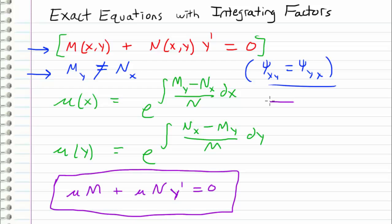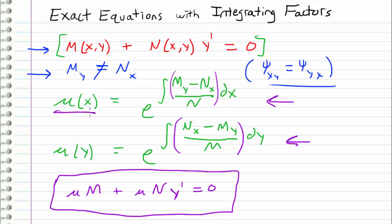The question you may ask is: which integrating factor do I pick? Typically, you pick the one that has the easiest integral to deal with. If (M_y − N_x)/N is easier to integrate than (N_x − M_y)/M, choose μ(x); otherwise choose μ(y). It doesn't strictly matter, but it is strategic to pick the integrating factor that makes your life easier. That's the introduction to integrating factors with exact equations. In the next video, I'll work through an example demonstrating how all of this comes together.